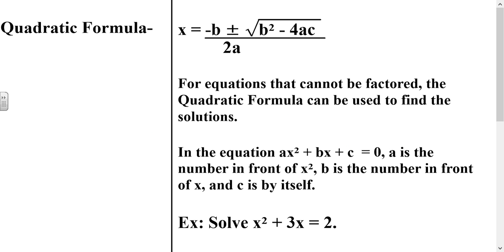So first of all, the quadratic formula is this right here: x equals the opposite of b plus or minus the square root of b squared minus 4ac, all over 2a. The reason why the quadratic formula is used is for equations that cannot be factored. If we cannot factor an equation, which would be the simpler way to find the answers, then we would use the quadratic formula to find the solutions.